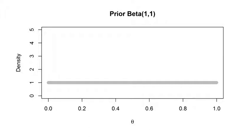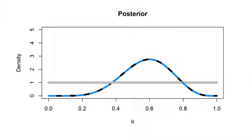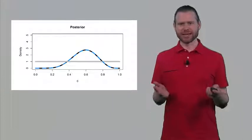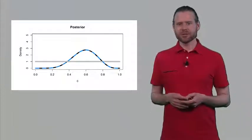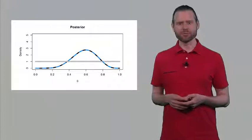In this case we have an uninformative prior distribution — anything goes. This is the prior before we collect some data. Then we collect data and have a likelihood function. We flipped the coin 10 times and 6 out of 10 times we observed heads. Combining these two functions, you see a black line that falls exactly on top of the likelihood function. This is what is meant by an uninformative prior — everything was equally likely beforehand, so it doesn't influence our judgment in any way. We just believe exactly what we have observed.